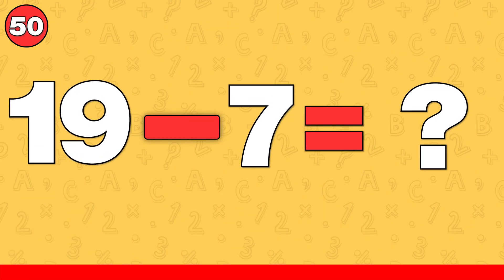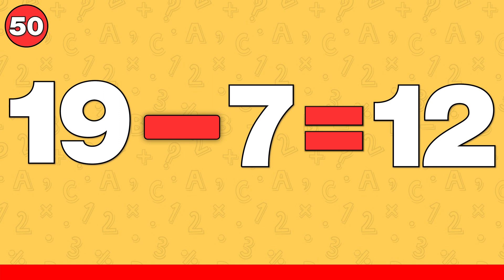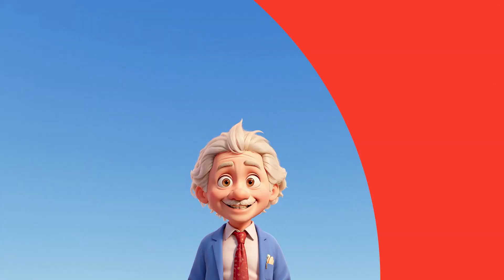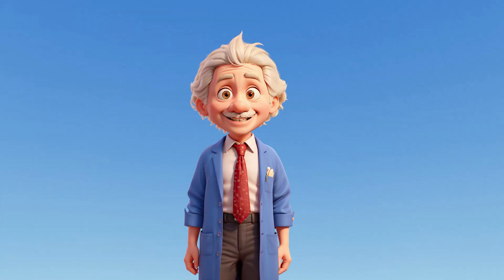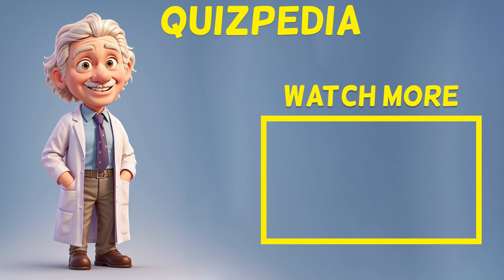19 minus 7. The answer is 12. And that's the end of our math speed test. Share your score in the comments and like this video if it was easy for you. Thanks for playing and see you next time.